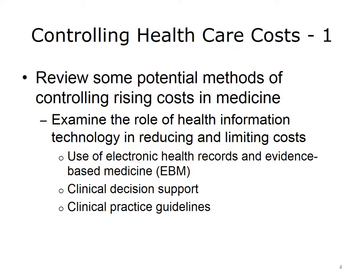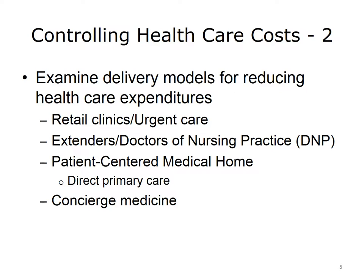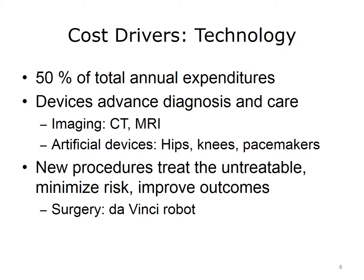This lecture discusses potential methods of addressing rising healthcare costs in the U.S. through the use of health information technology to coordinate care, the use of electronic health records to improve health information exchange, and the use of evidence-based medicine, or EBM, such as clinical decision support and clinical practice guidelines to better support providers. This lecture also describes newer healthcare delivery models, including retail clinics and urgent care centers, and the use of physician extenders and doctors of nursing practice, or DNPs, as well as the patient-centered medical home and concierge medicine, and their capacity to reduce healthcare expenditures.